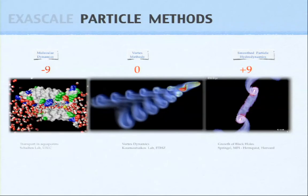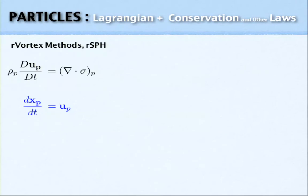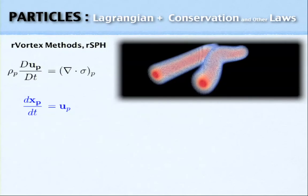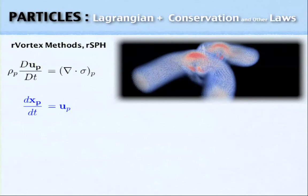The common thing across all these cases is that you are using particles. And what do these particles do? They move according to the velocity field. The velocity field changes according to conservation laws, or what we call remeshed vortex methods or remeshed SPH.